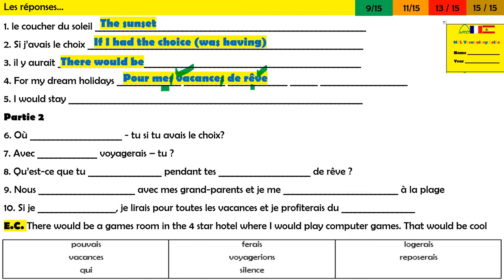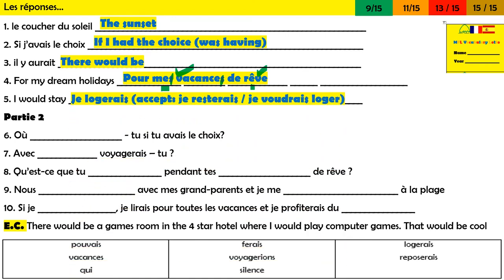Donc, le dernier — 'I would stay.' There are two ways to say it: je logerais, or je resterais, or je voudrais loger, or je voudrais rester. If you've written all four of those, I'll give you four marks for showing me your range. Give yourself a mark out of five for the first section.